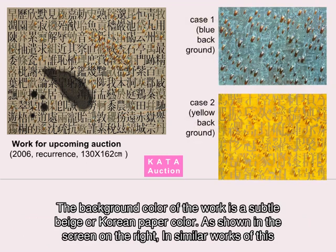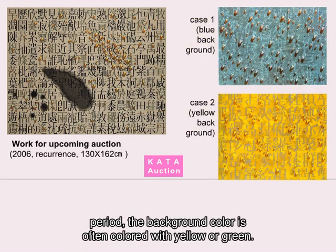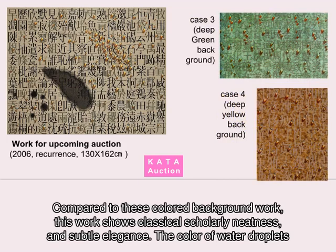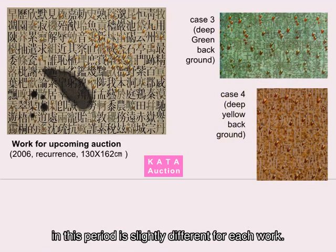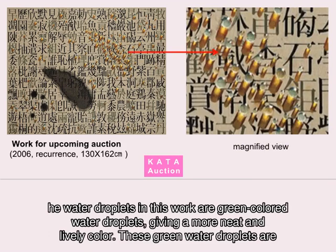The background colour of the work is a subtle beige or Korean paper colour. As shown on the screen on the right, in similar works of this period, the background colour is often coloured with yellow or green. Compared to these coloured background works, this work shows classical scholarly neatness and subtle elegance. The water droplets in this work are green coloured, giving a more neat and lively colour.